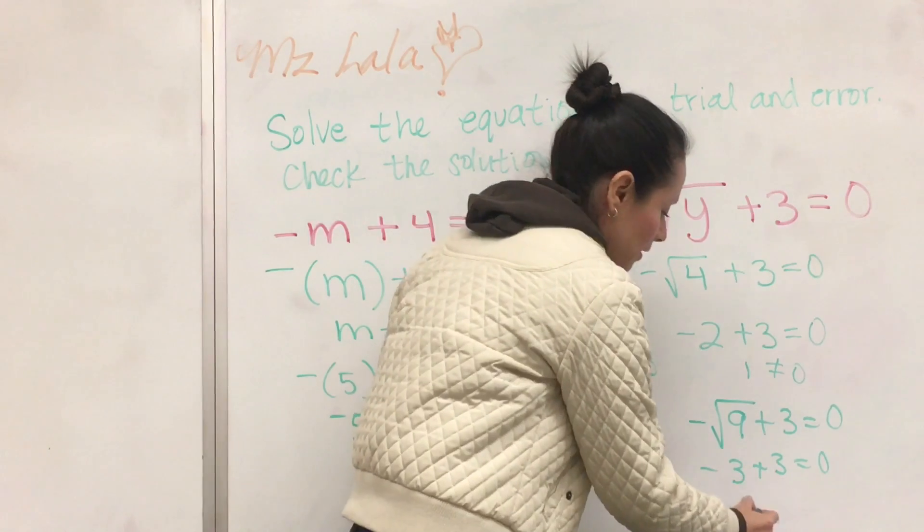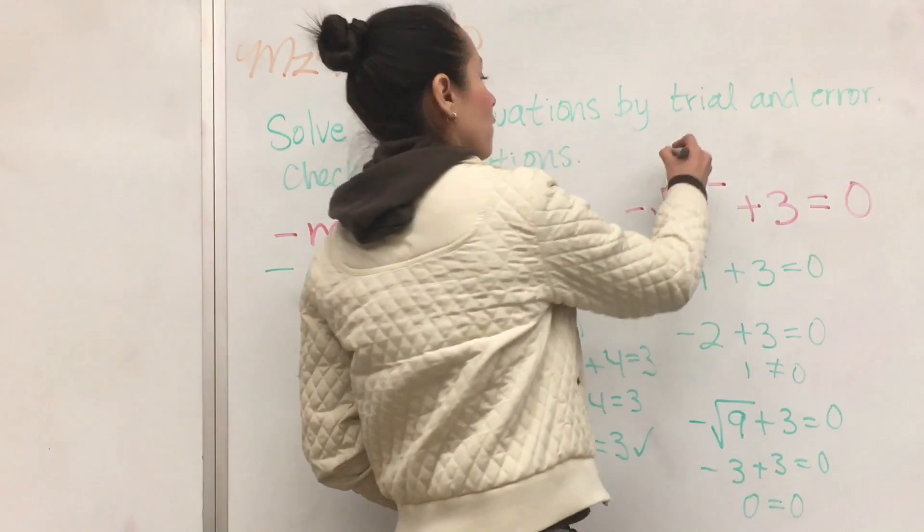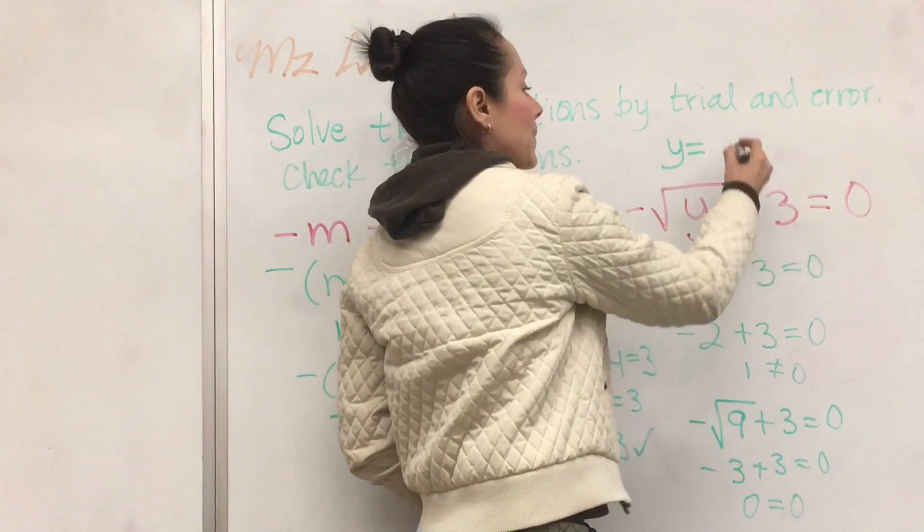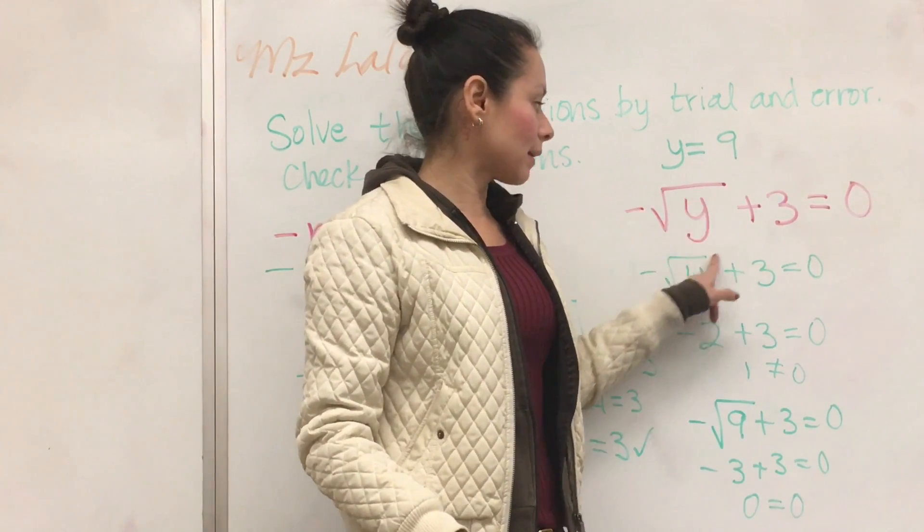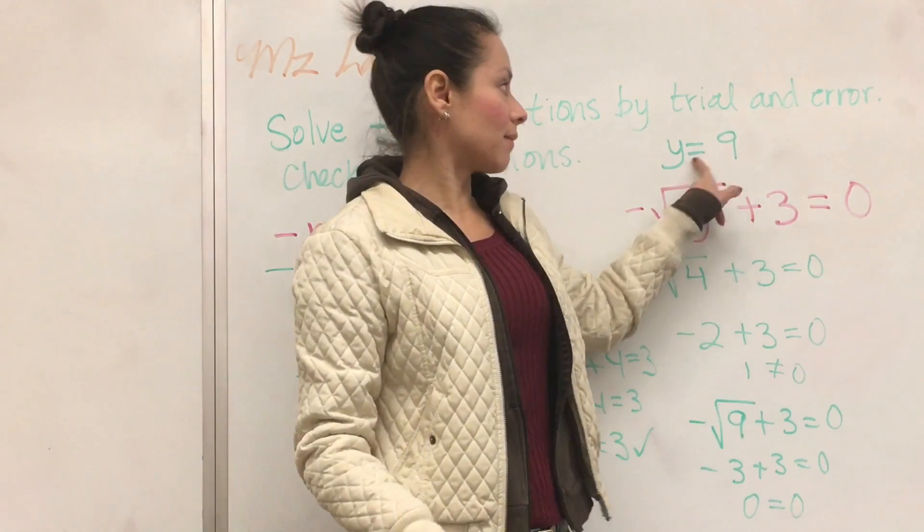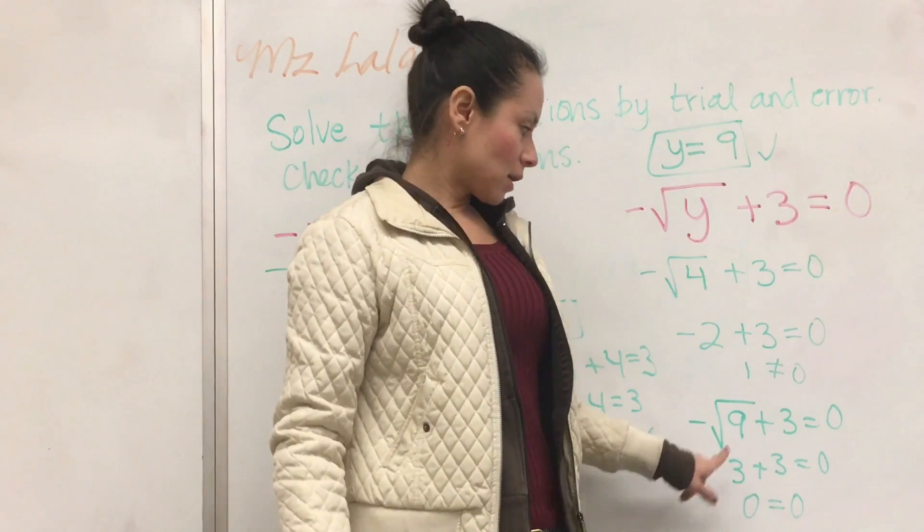And yes, we got 0 equals 0, which means what are we plugging in for y? Y must be 9, not negative 9, because we plugged in here a positive 9. So y must be 9 for it to be a true statement.